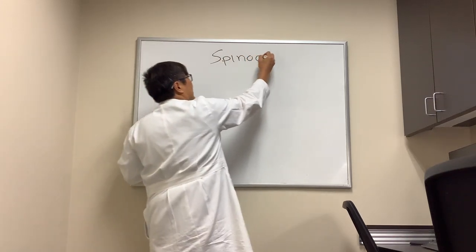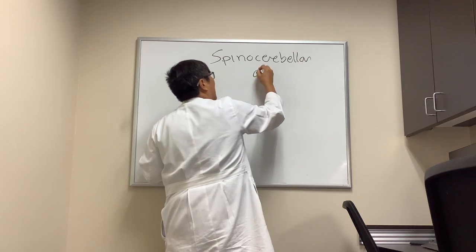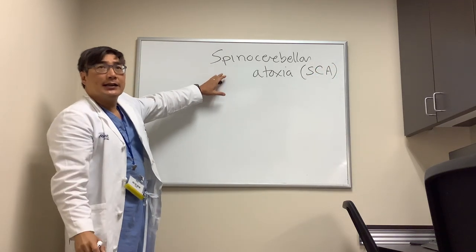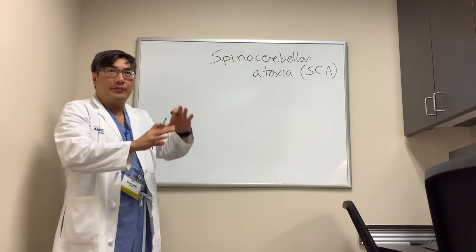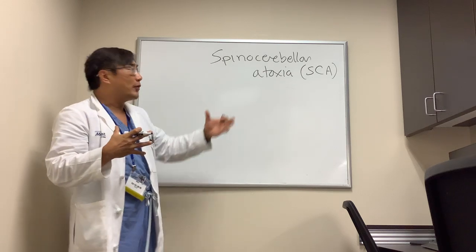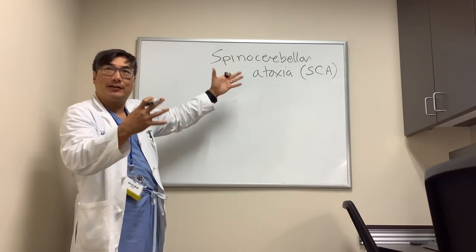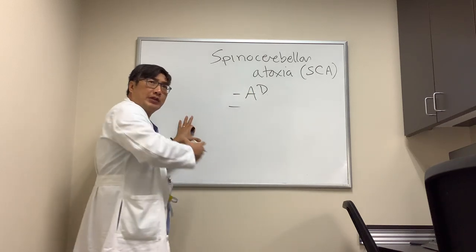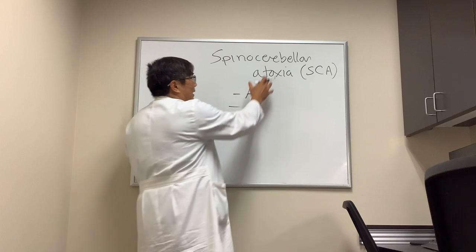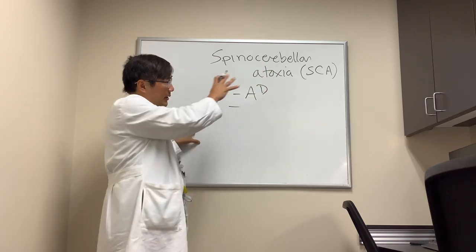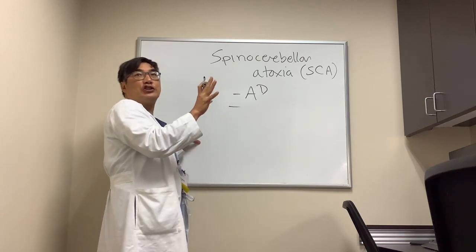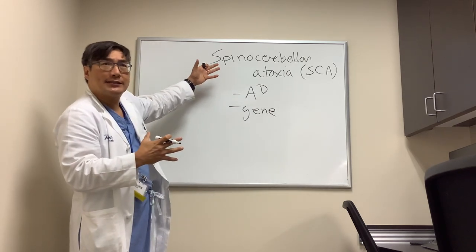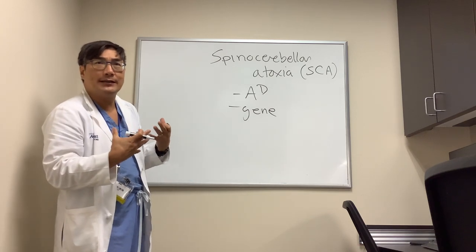I want to tell you about the spinocerebellar ataxias and how they come to ophthalmology. We call these SCAs — they have many numbers, so it's not critical to know each one, but you do need to know what we're looking for when someone is referred with spinocerebellar ataxia. It's autosomal dominant, so patients often have a positive family history, and it's a progressive disorder with years of symptoms. The MRI may show cerebellar atrophy, other workup is negative, and so they end up doing the SCA gene panel. The only way to know the specific gene is to test it — however, ophthalmologists can help neurologists by looking for things that only we in ophthalmology can see.